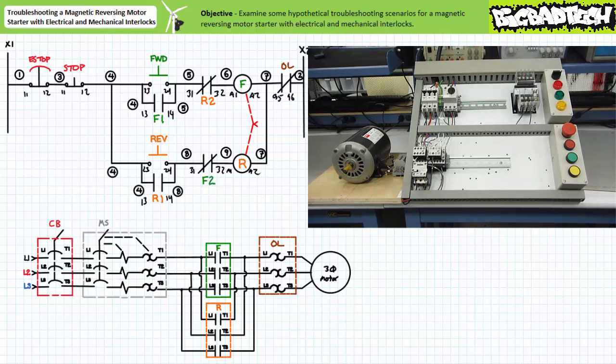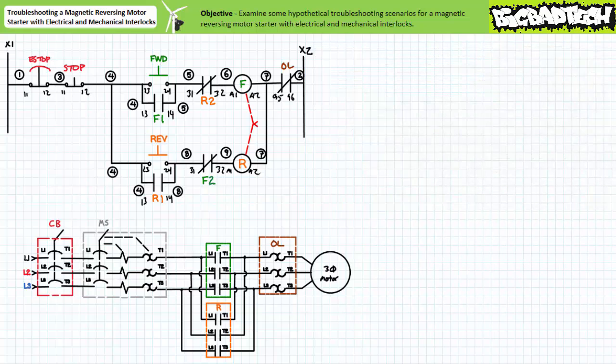Low or no voltage protection circuits like this one are commonly employed in scenarios where an operator may be injured or an industrial process damaged by the unexpected restart of a motor.